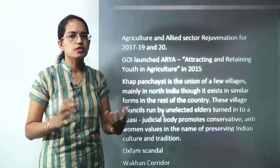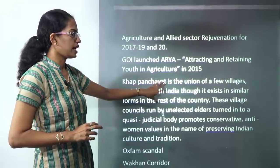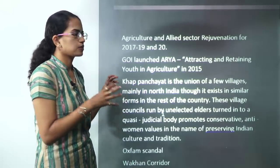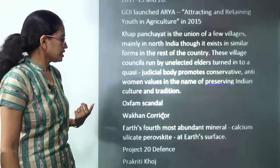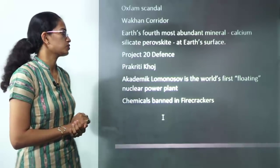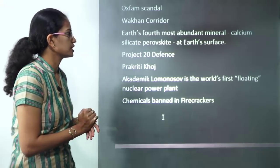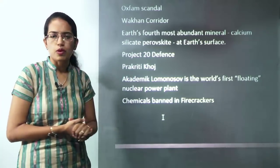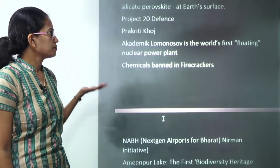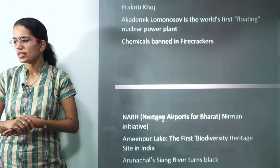You have Khap Panchayat — it's a kind of small union or a group of villages mainly in North India, Uttar Pradesh and Bihar areas. It is run by unelected elderly people who basically have a conservative and anti-women attitude. The next is the Oxfam scandal and the Wakhan corridor. You have India-Iraq relationships, which are again important. The fourth most abundant mineral discovered is calcium silicate perovskite, which is also important. Then you have Project 28 defence, Prakriti Khoj, and the world's first floating nuclear plant.